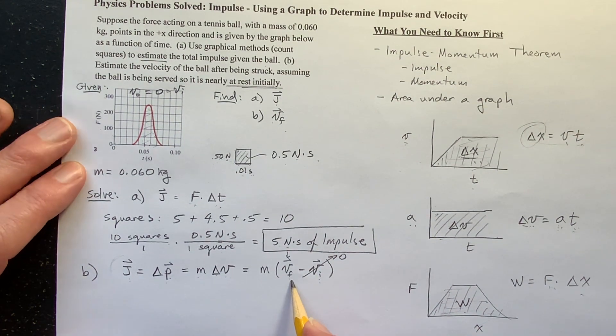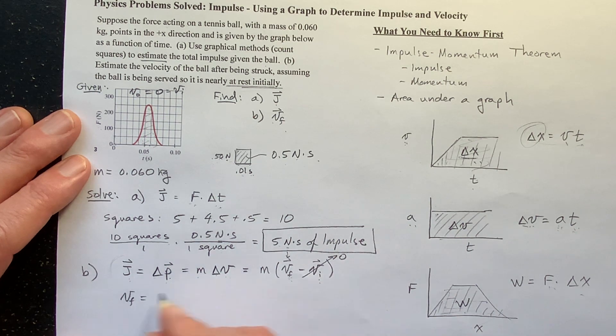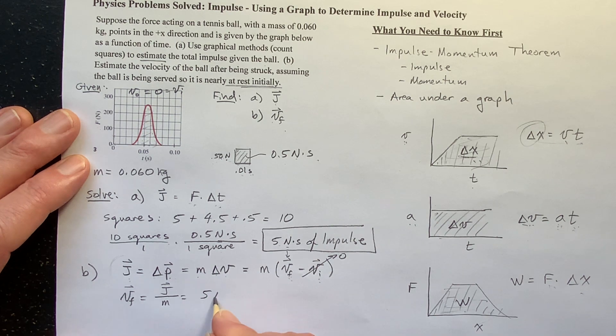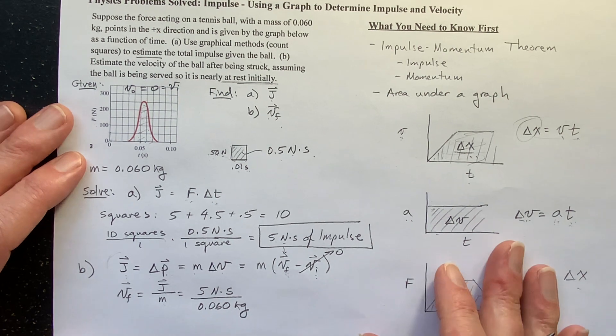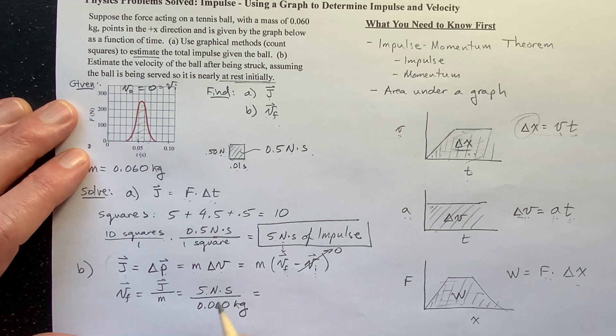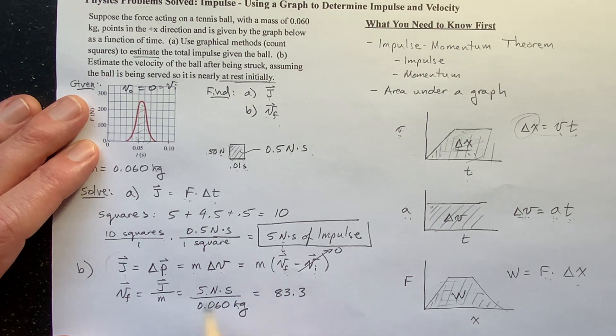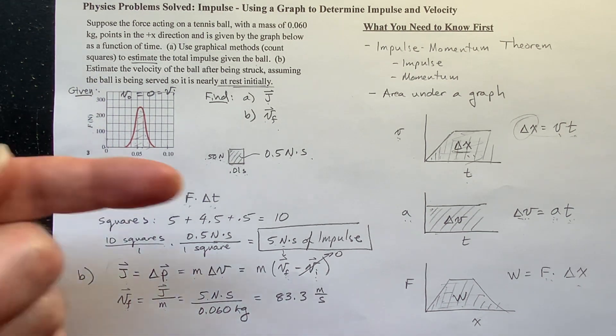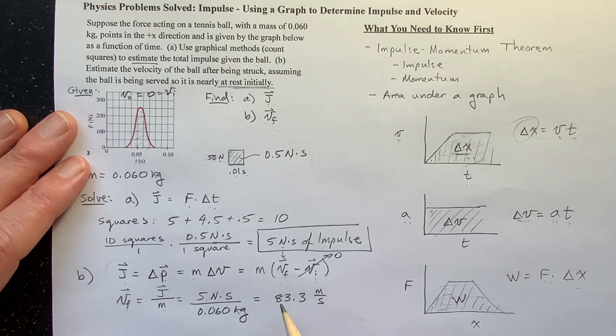And then, so now we can solve for this final velocity. So the final velocity in this problem is just the impulse divided by the mass. Well, the impulse is, we found it to be five Newton seconds. And then we're going to divide it by the mass, which is given to be 0.060 kilograms. And when we do the arithmetic, five divided by 0.06, we get 83.3. And of course, the units for velocity are meters per second. And it's positive. That means the final velocity is going to be in the positive direction. So that's my answer for V final. And so now I'm done with the problem.